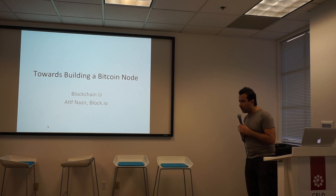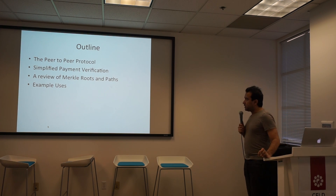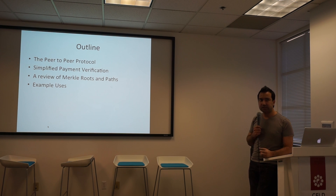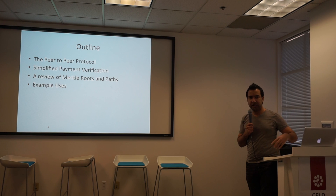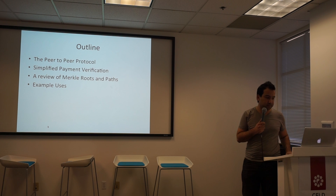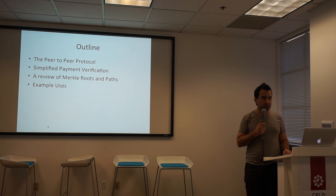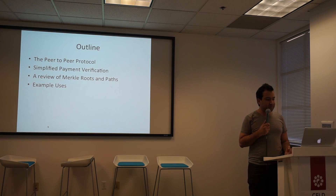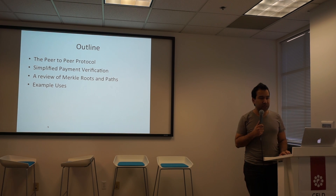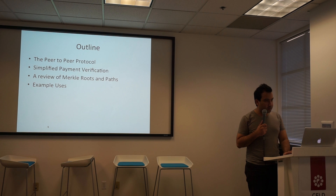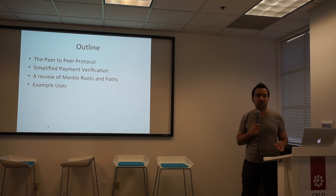With that background, let's look at how we build a Bitcoin node. In this presentation we'll talk about the peer-to-peer protocol — how do I talk to other nodes when I connect to them? We'll also talk about SPV, or Simplified Payment Verification, which is a way to efficiently verify your transactions, and some risks involved with it. An important part of understanding SPV is understanding Merkle Roots and Merkle Paths. Ryan Charles last week explained what Merkle Roots are; we'll briefly talk about Merkle Paths. For review, you can look at the end of chapter seven in the Mastering Bitcoin book. Then we'll talk about some of the cool things you can do once you know how to communicate with other nodes on the Bitcoin network.